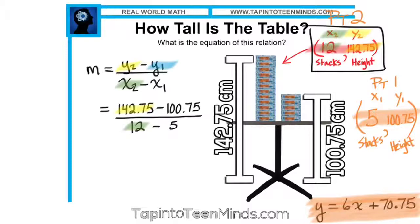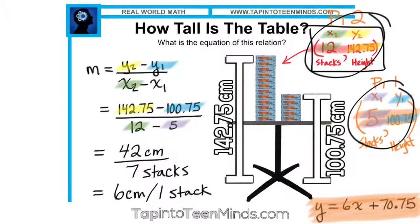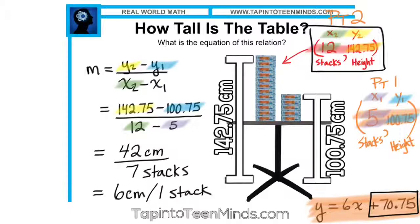And when we actually perform the math by subtracting our y2 and y1 as well as x2, x1, we end up with the same rate of change or same slope of 42 cm per 7 stacks or 6 cm for every 1 stack. At this point, you could then sub your slope into your y equals mx plus b as well as either of the points on the line, or any point from that line, I should say, in order to solve for your y-intercept, which we already know is 70.75.